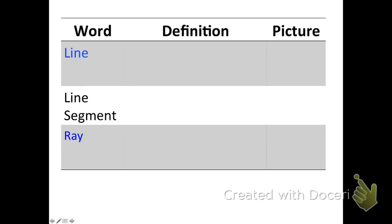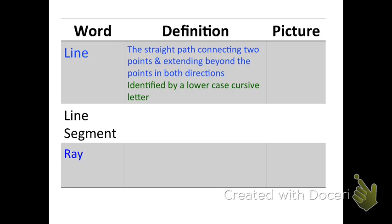The next three words are line, line segment, and a ray. These are all similar and have things in common. You'll notice I try to do that with all the definitions. I put things together that have similarities. So a line is the straight path connecting two points and extending beyond the points in both directions. It's identified by a lower case cursive letter. So again, a line is right there. And it's identified by a lower case cursive letter. So since I can't do cursive on the computer, I do an italics L. You will do a cursive letter. Arrows in both directions show that the line extends beyond the points in both directions.